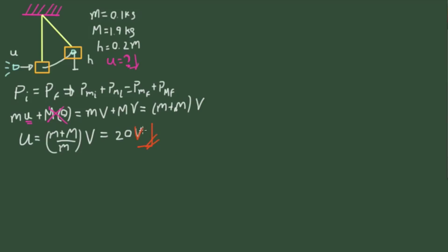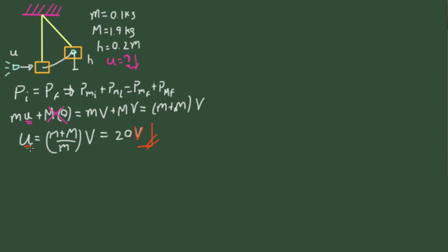Now you need to find v. To determine v, you use conservation of energy, because once the collision is over the bullet-block system is just moving under a gravitational field. So for the second part, the total initial energy equals the total final energy.